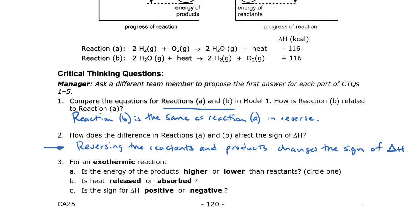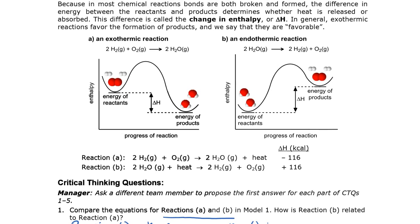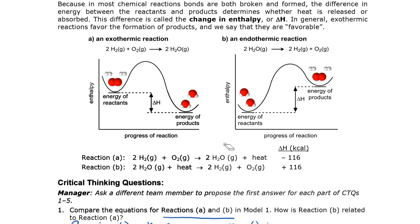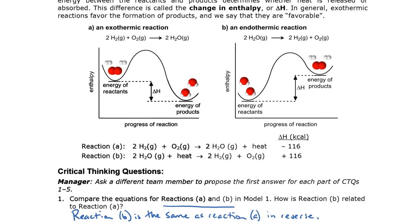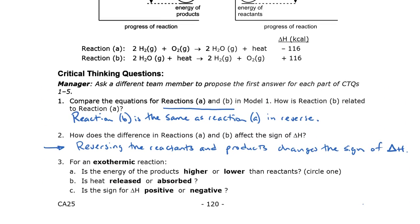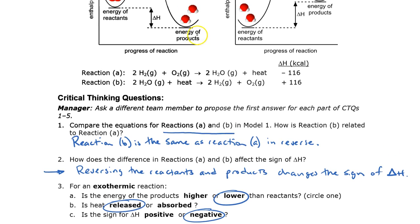Question three asks you about an exothermic reaction. Notice that an example of one is given in this diagram. Pause the video and write your answer for three by circling your choice on A, B, and C — all three of the above. The energy of the products is lower than the energy of the reactants, therefore heat energy is released, not absorbed, and the sign of delta H is negative.